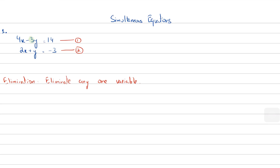Since I've decided to eliminate y, the coefficient of y in the first equation is minus 3. So what do I need to add to minus 3y to make it zero? I need to add the opposite, which is positive 3. That means I need the coefficient of y in the second equation to be positive 3. It's currently 1, so I'm going to leave the first equation as it is: 4x minus 3y equals 14.